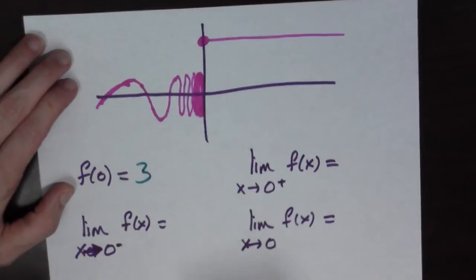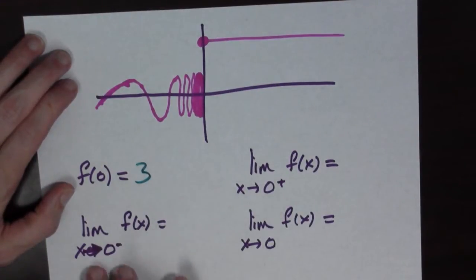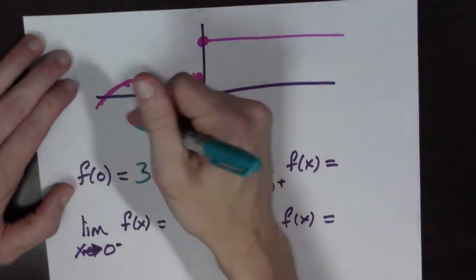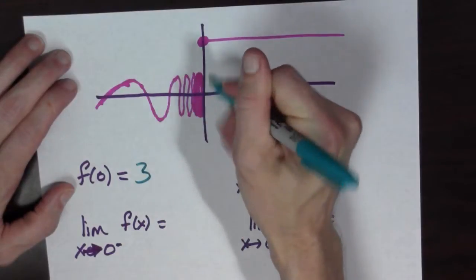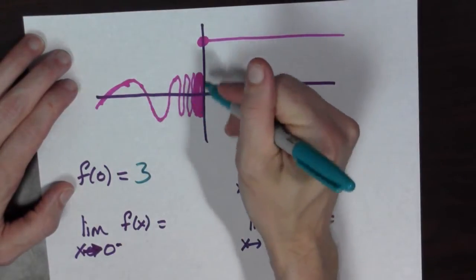So f of 0, that's 3. And the limit of f of x as x goes to 0 from the left, well, because it's oscillating wildly, it doesn't approach anything. It gets closer.